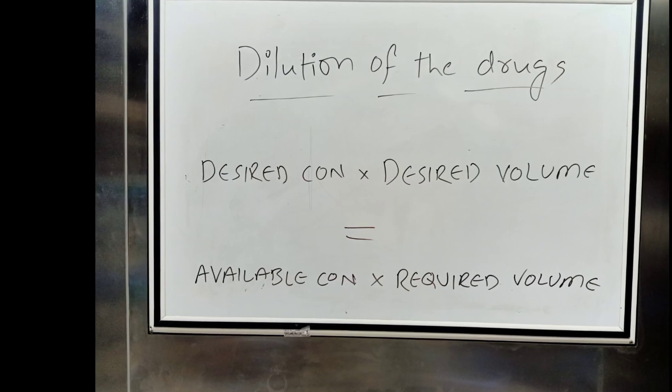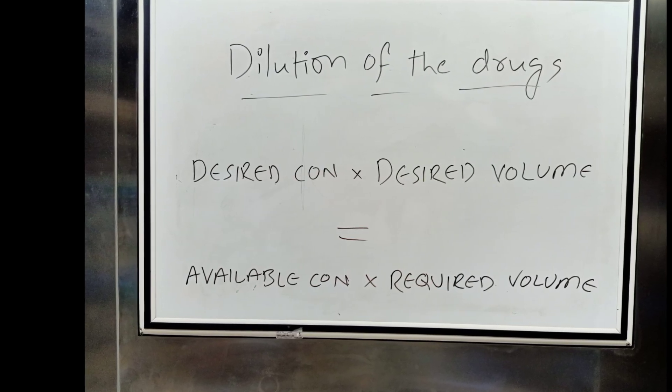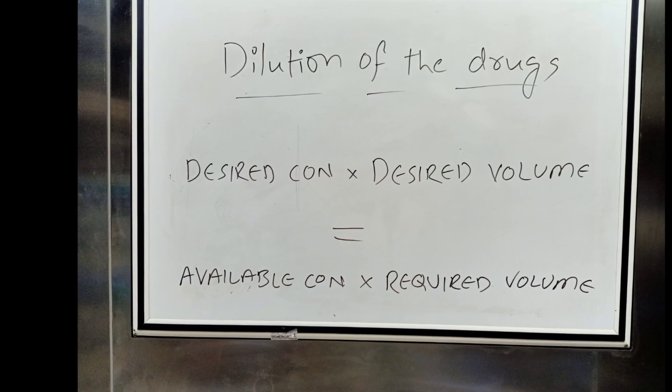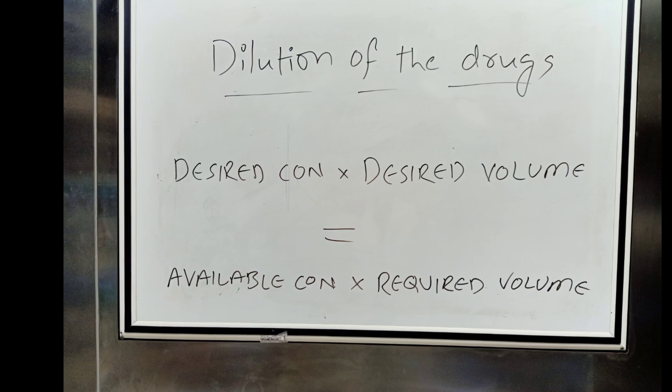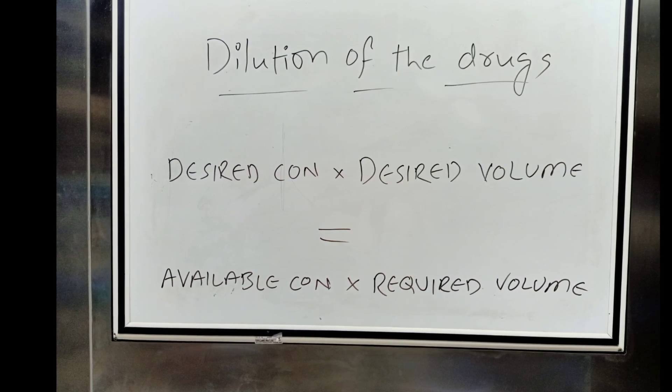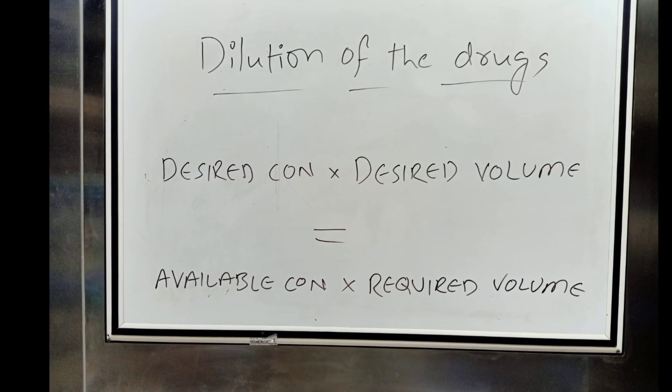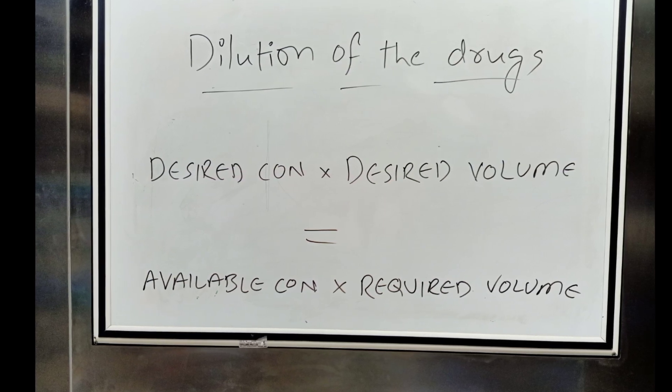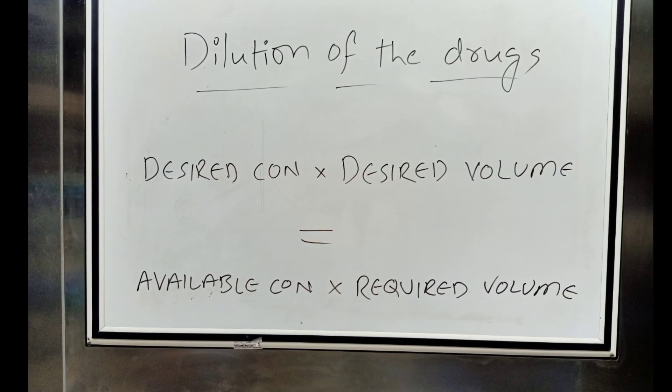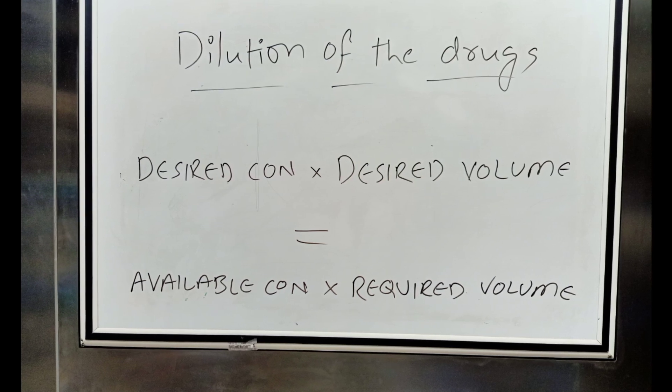By using this formula, we can dilute the given concentration of the drug to any extent to get a desired concentration. Usually, normal saline or distilled water ampoules are used as diluents. Coming to the formula: desired concentration times desired volume equals available concentration times required volume.